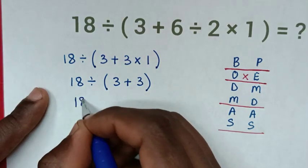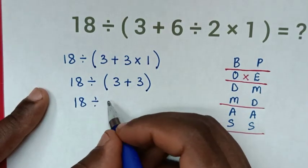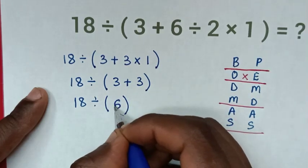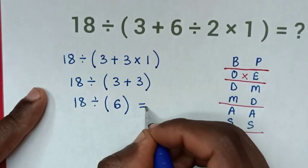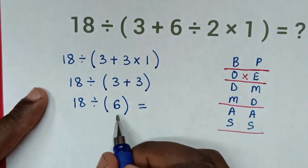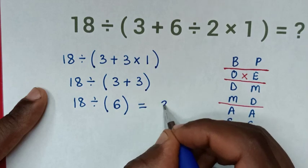Then, it will be 18 divided by bracket, 3 plus 3 is 6. So, it will be equal to, in here, it remains only this one operation, of 18 divided by 6, which is 3.